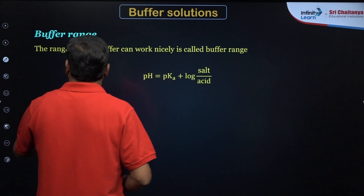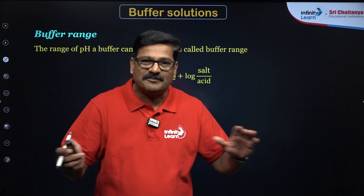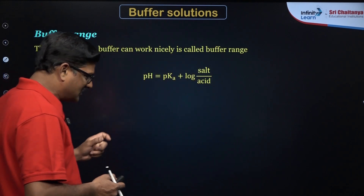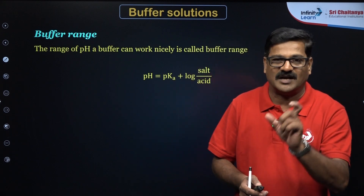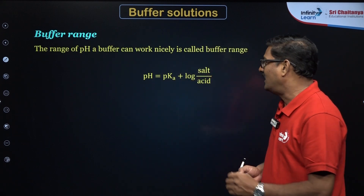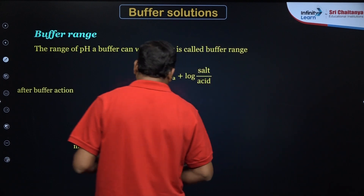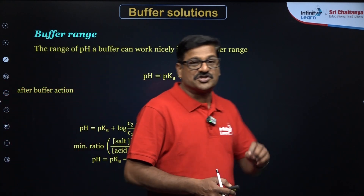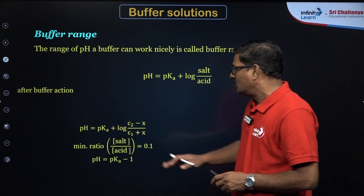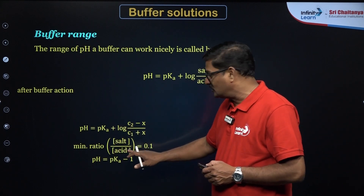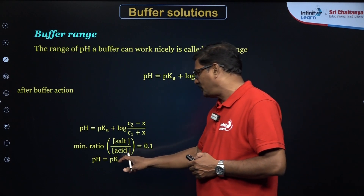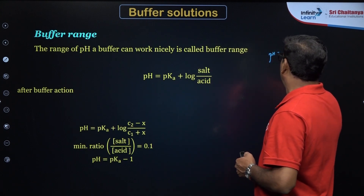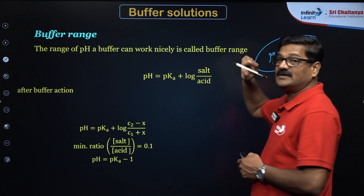From there, you can see the buffer range. Does the buffer work in all pH ranges? No. A buffer works nicely only in certain pH values — that is pKa ± 1. That is the range. pH = pKa + log(salt/acid). The minimum molar ratio of salt to acid is 0.1, giving pH = pKa − 1. So the pH range of the buffer is pKa ± 1. This is an important trick for solving NEET examination questions.